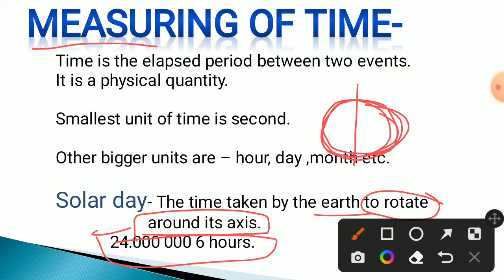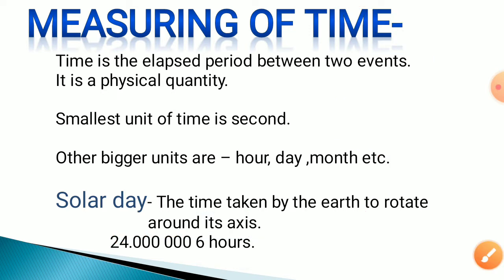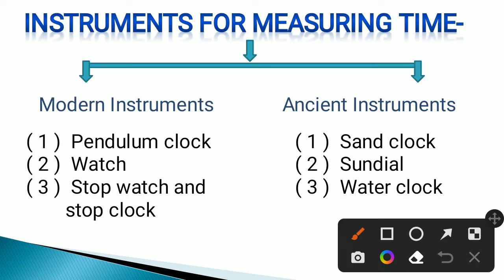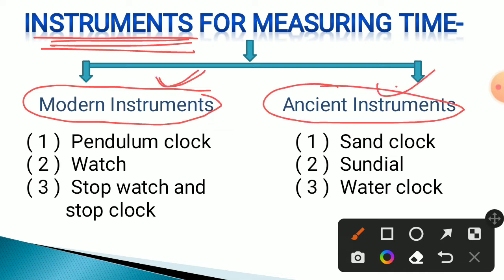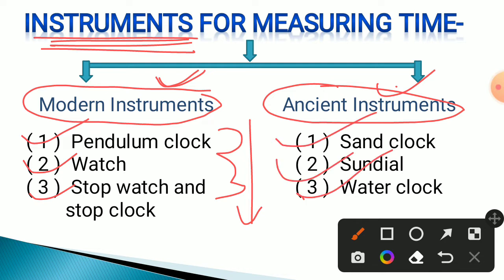Now, what are the instruments to measure time? There are different instruments for modern times and ancient times. In modern times, a pendulum clock is used to measure time, along with a watch and a stopwatch. In ancient times, instruments like the sand clock, sundial, and water clock were used — these gave only approximate, not accurate, time measurements.